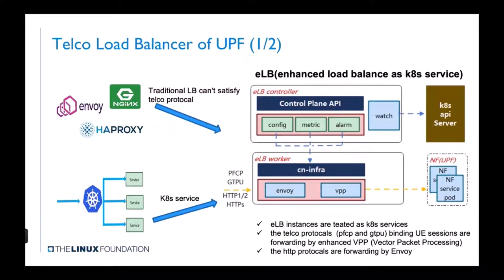UPF also needs to balance and distribute workloads across multiple processing units. Like web applications, there are already successful load-balancing solutions such as Envoy and Nginx. However, these only support Layer 3 IP, Layer 4 TCP/UDP, and Layer 7 HTTP load balancing, and cannot support UPF load balancing. Therefore, we developed a telco load balancer supporting the Packet Forwarding Control Protocol (PFCP), which transfers between UPF and SMF, and the GPRS Tunneling Protocol for User Plane (GTP-U), which transfers between UPF and the radio access network.